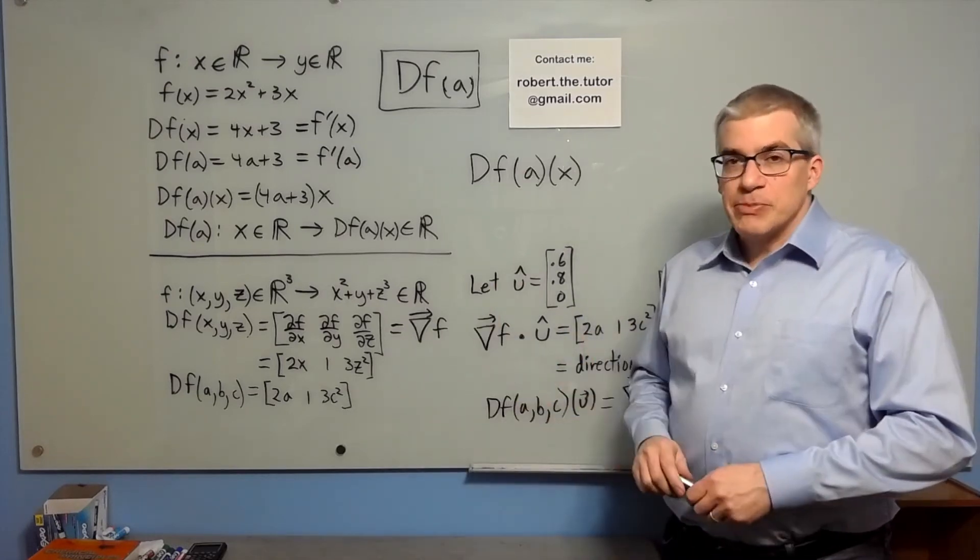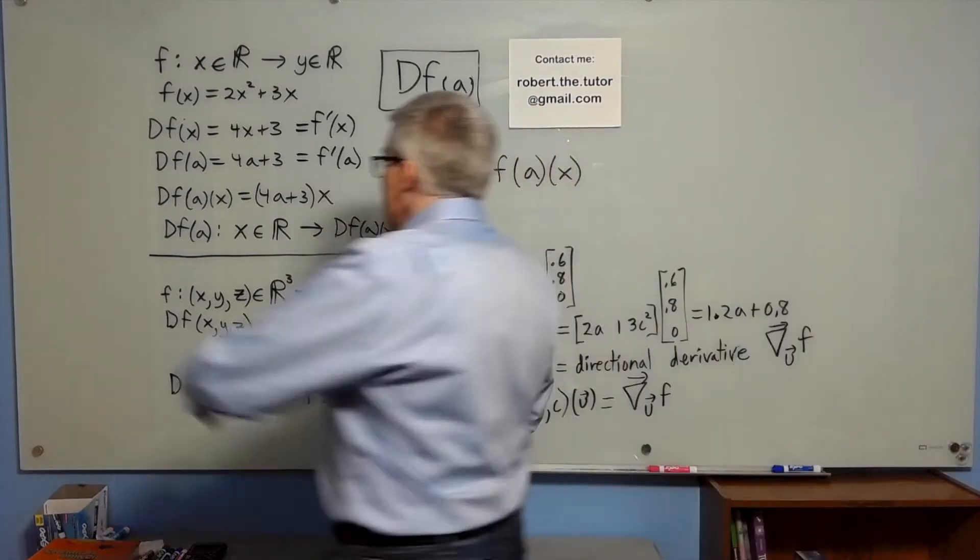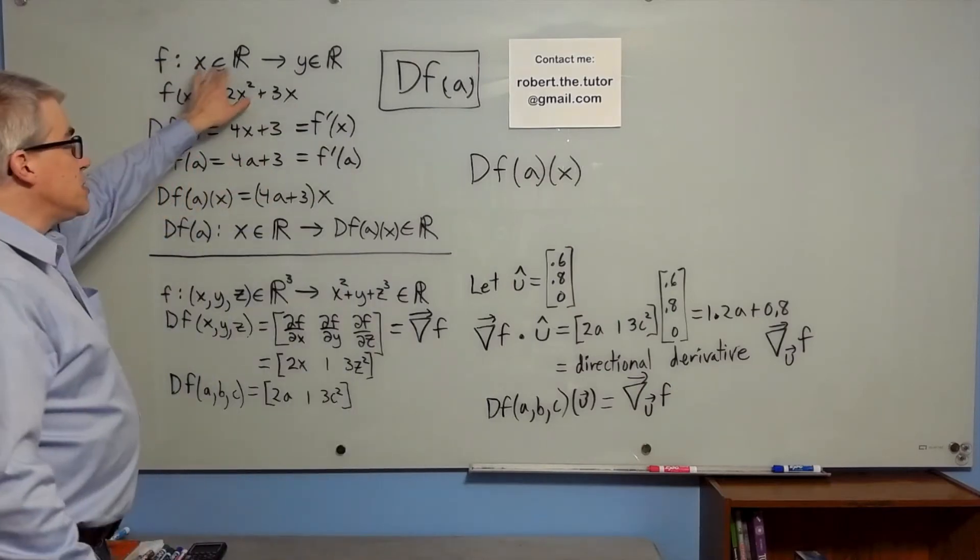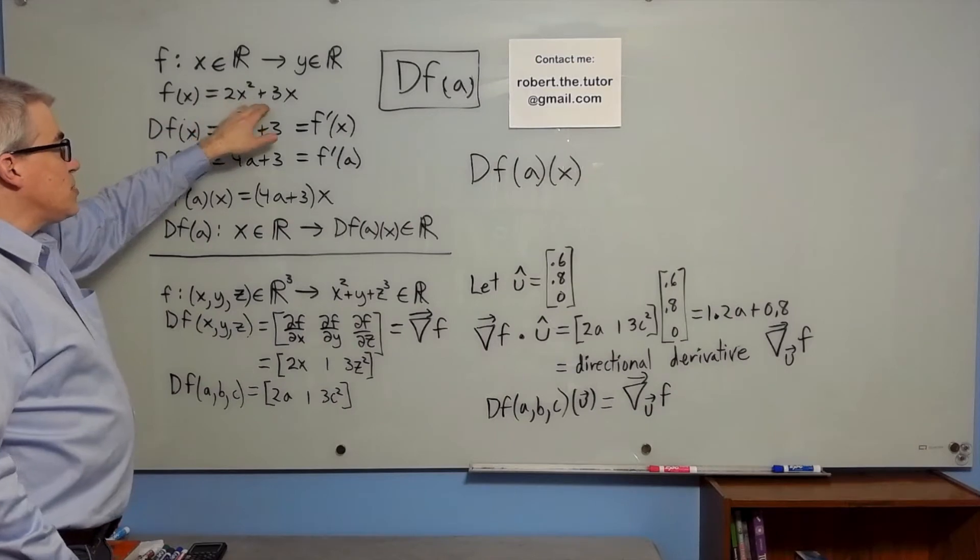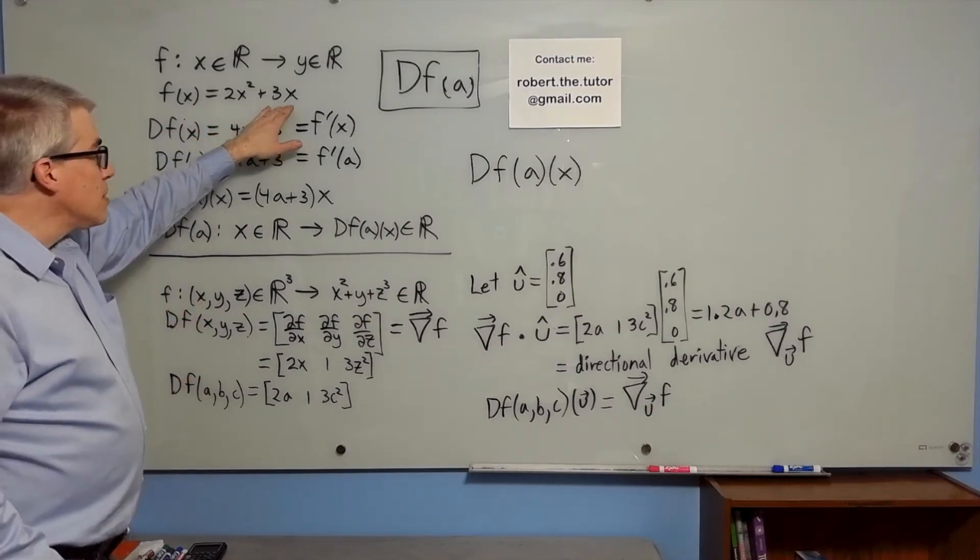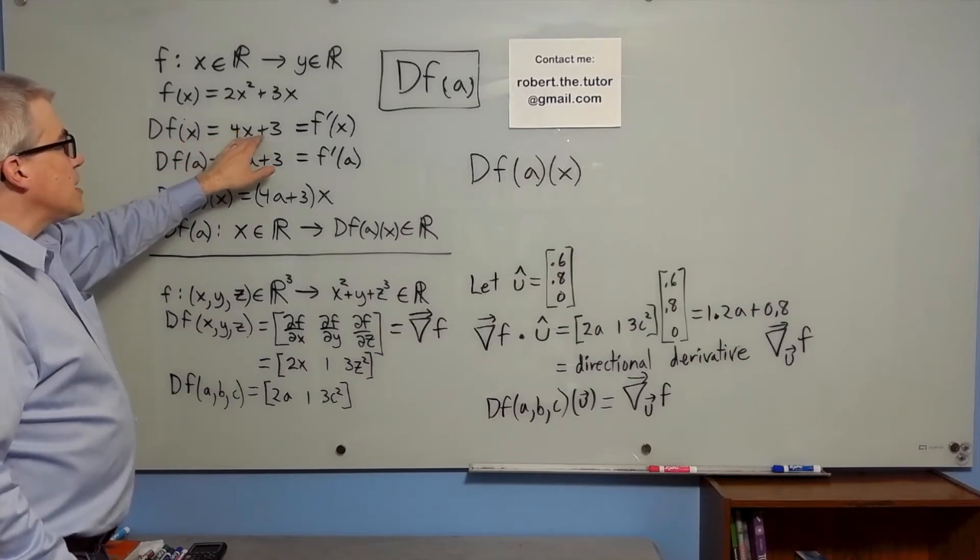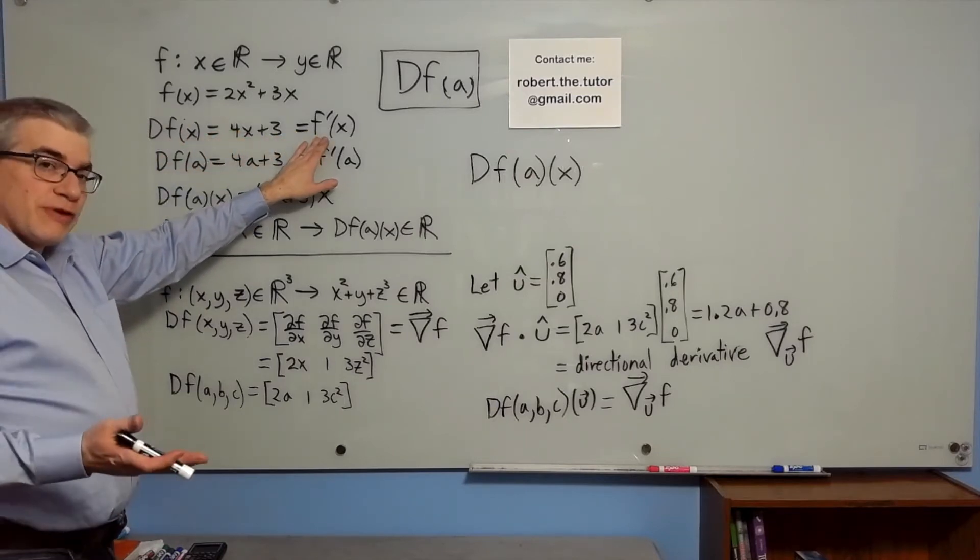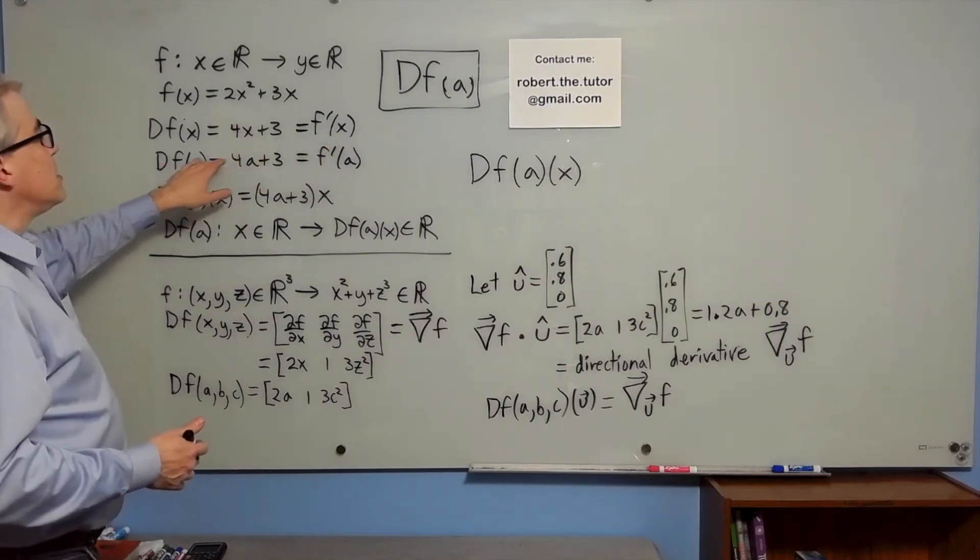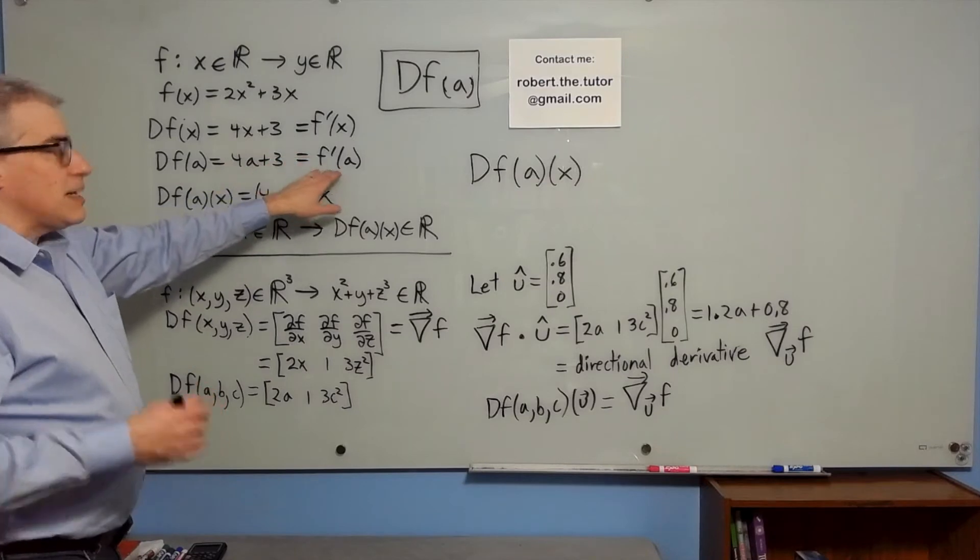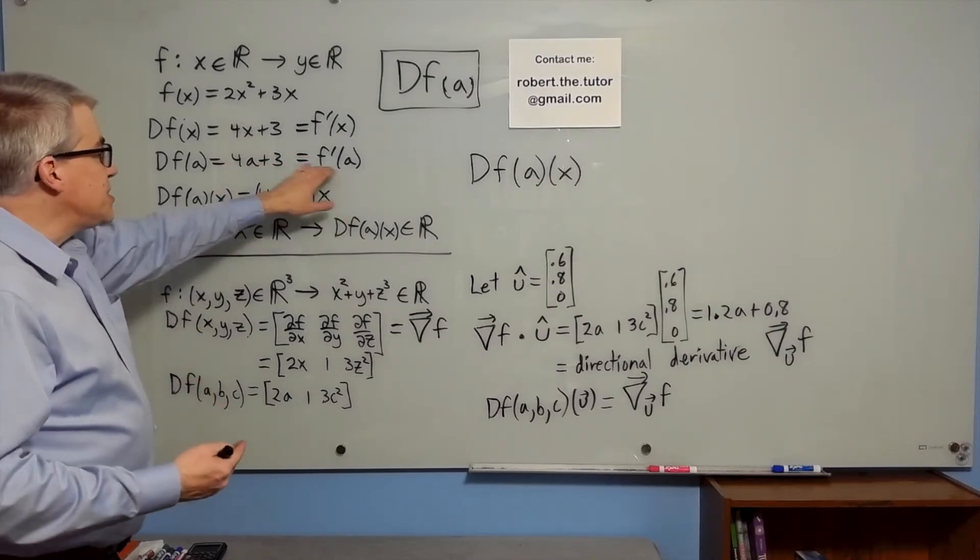So my first example, let's just take a simple function from the reals to the reals. f takes x in the reals to y in the reals. So f of x is 2x squared plus 3x. Just picked that function. df of x is 4x plus 3. That's actually the derivative, the derivative of f. df of a is 4a plus 3. That's the slope, the derivative, at the point a. So this is the slope.